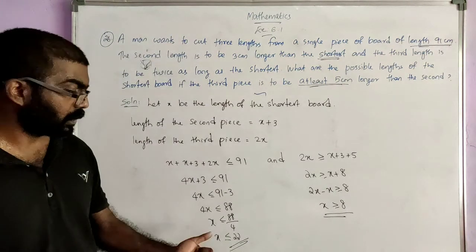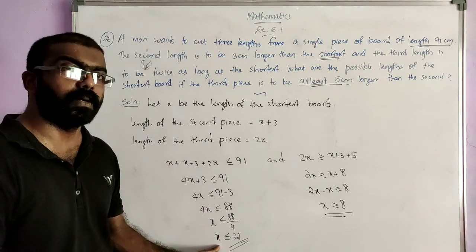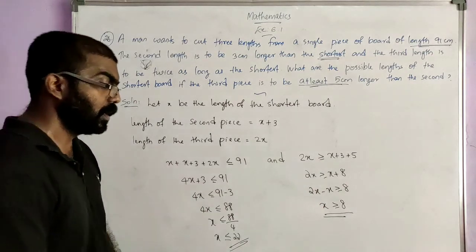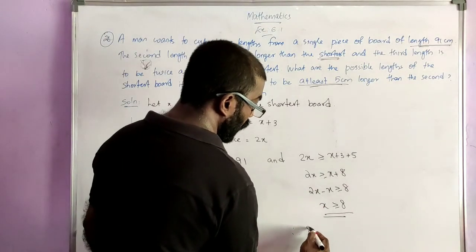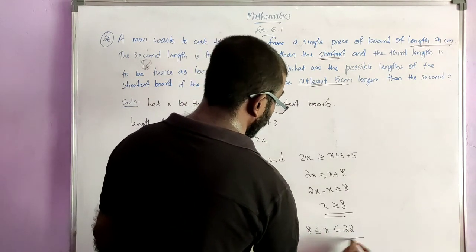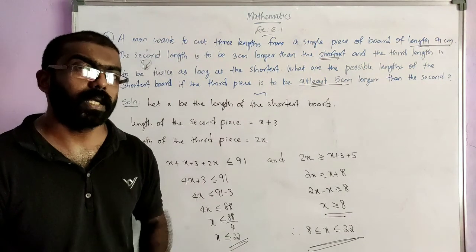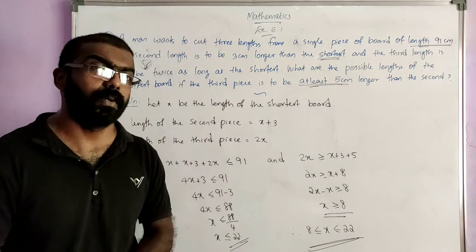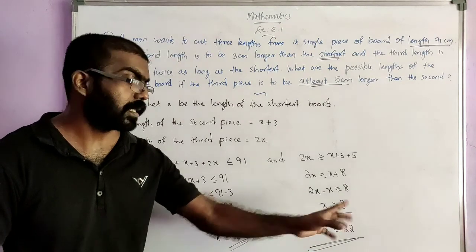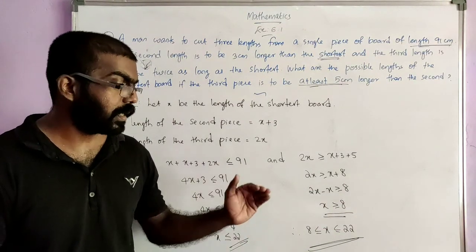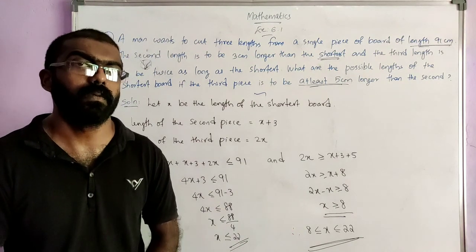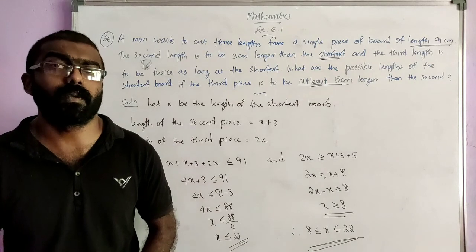We can combine these two conditions: X is less than or equal to 22, and X is greater than or equal to 8. Therefore, 8 less than or equal to X less than or equal to 22. The length of the shortest board is greater than or equal to 8 but less than or equal to 22 cm. This finishes exercise 6.1.